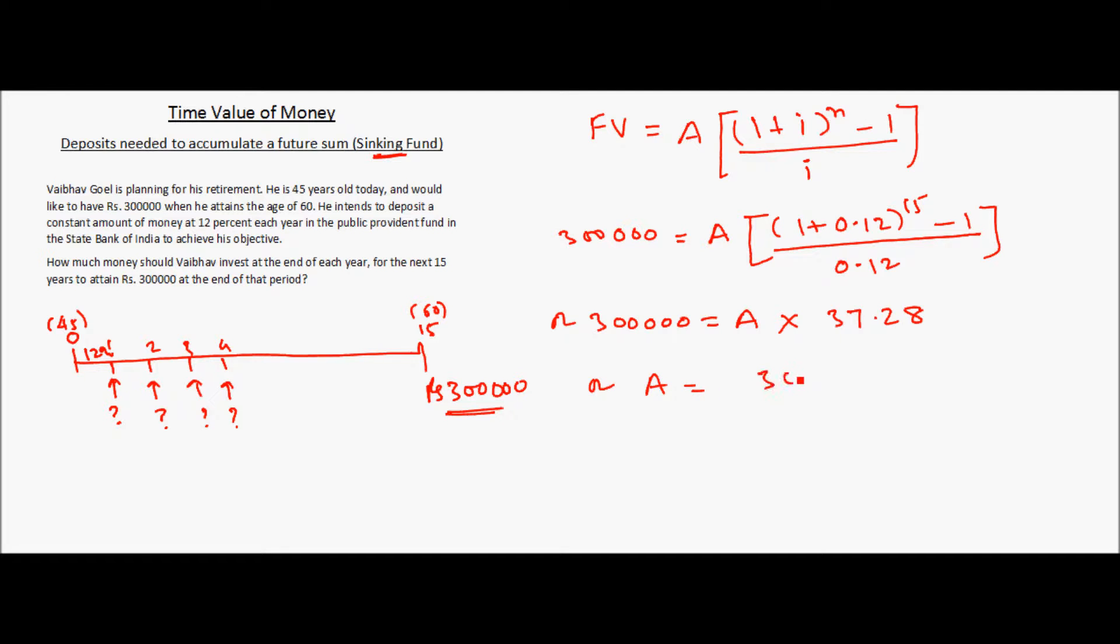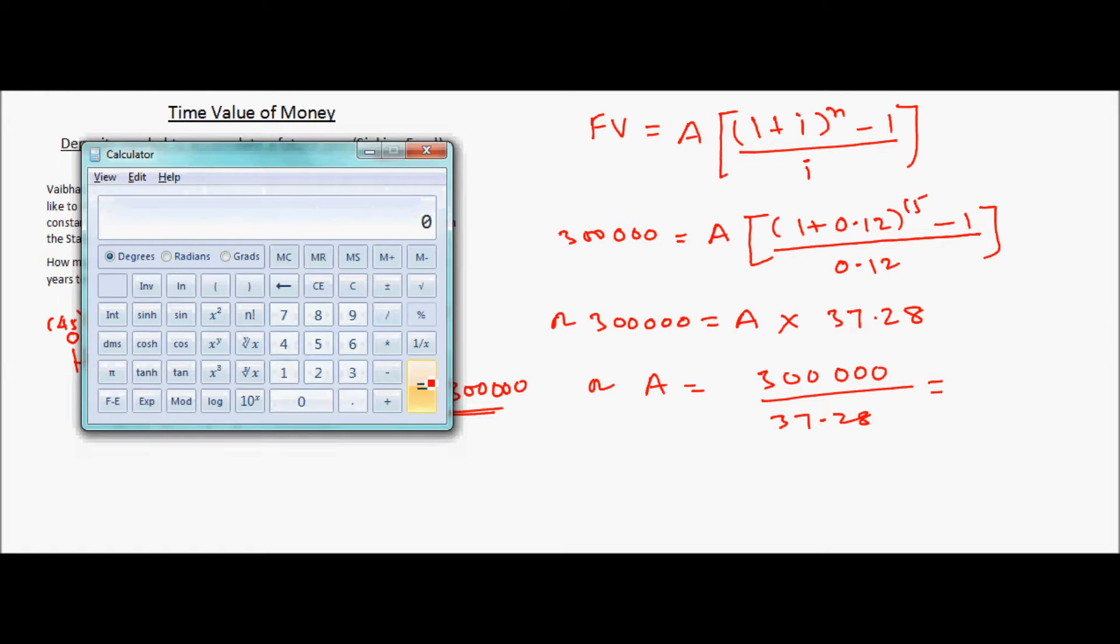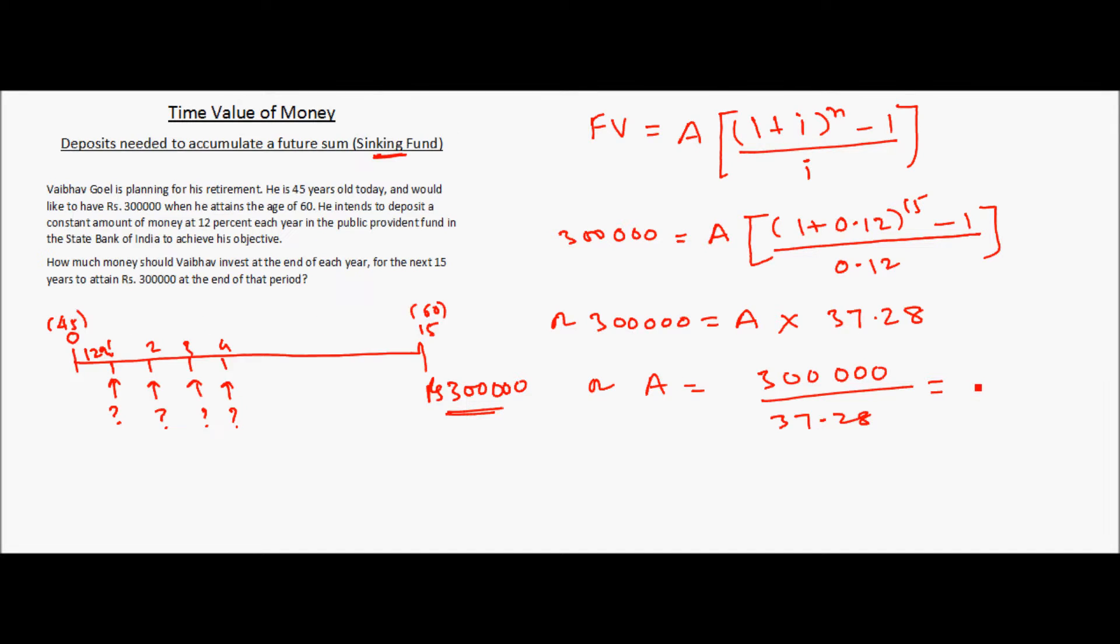So A is equal to 300,000 divided by 37.28. So 8047.21 rupees.